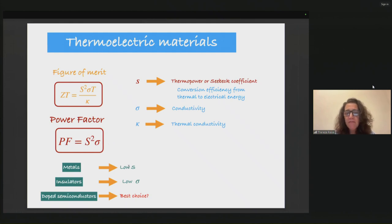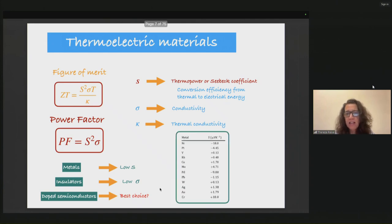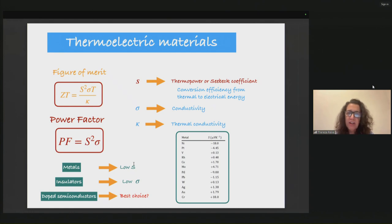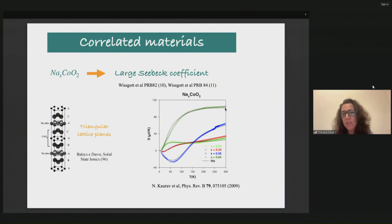In metals we usually have a low Seebeck coefficient, and in insulators we have low conductivity, so the product that appears in both the figure of merit and the power factor is small — and we want this to be as large as possible. For a long time, doped semiconductors were the best choice. Some values of the Seebeck coefficient in microvolts per kelvin show the larger ones are around 20, which is not very high. More recently, correlated materials have been studied in this context and have shown large Seebeck coefficients. In sodium cobalt oxide (NaxCoO2) the Seebeck coefficient is almost a hundred or more — five times larger than in metals.